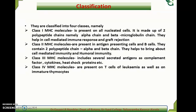Class 1 MHC molecules are made up of two polypeptide chains, namely the alpha chain and the beta-2 microglobulin chain. Class 2 MHC molecules are present in antigen-presenting cells and B cells, and they contain two polypeptide chains — alpha chain and beta chain.